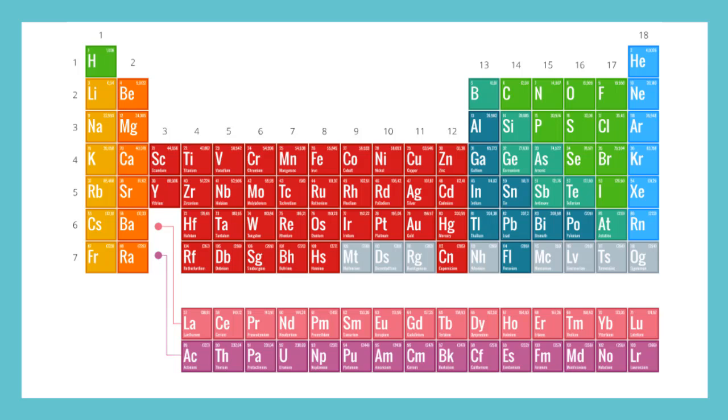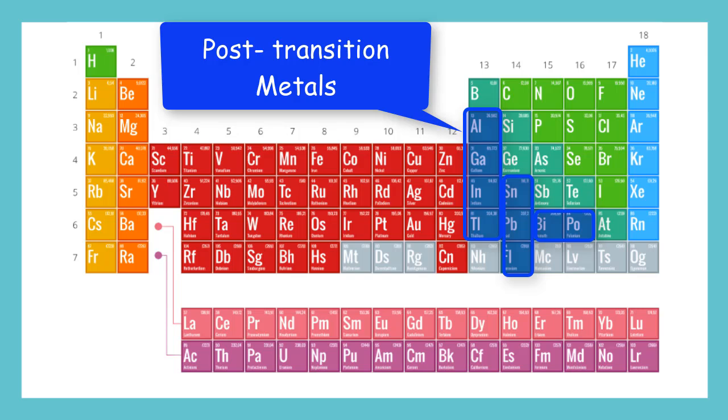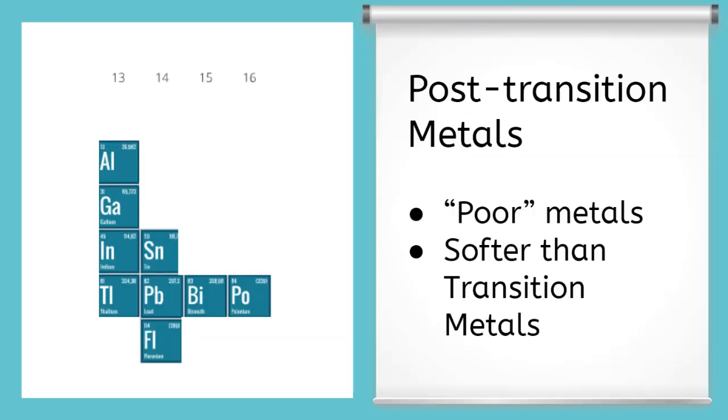The dark teal boxes are called the post-transitional metals. Notice that they are grouped together after the transitional metals in groups 13 through 16 and periods 3 through 7. Sometimes, scientists refer to the post-transition metals as poor metals. Compared to the transitional metals, the post-transition metals are softer and have a lower melting point, meaning they turn to liquid at lower temps.